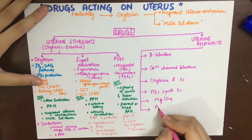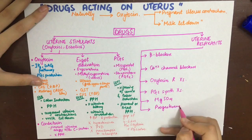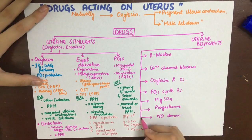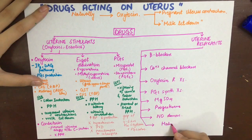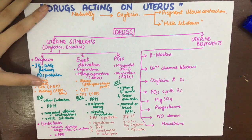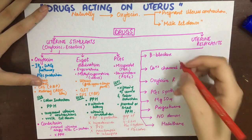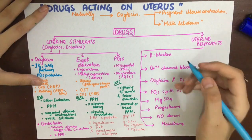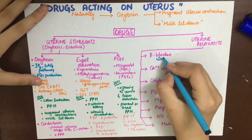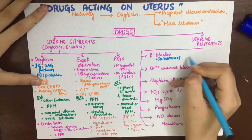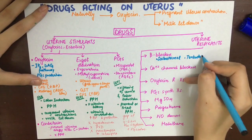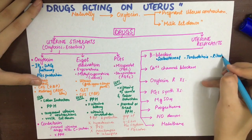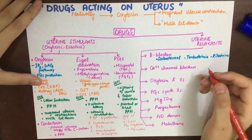Beta-2 receptors in the uterus cause uterine relaxation by increasing intracellular cyclic AMP. Beta-agonists that can be used include salbutamol, terbutaline, and ritodrine. Side effects of these beta-agonists include tachycardia, palpitations, and pulmonary edema, so they are contraindicated in diabetics and patients with heart disease.